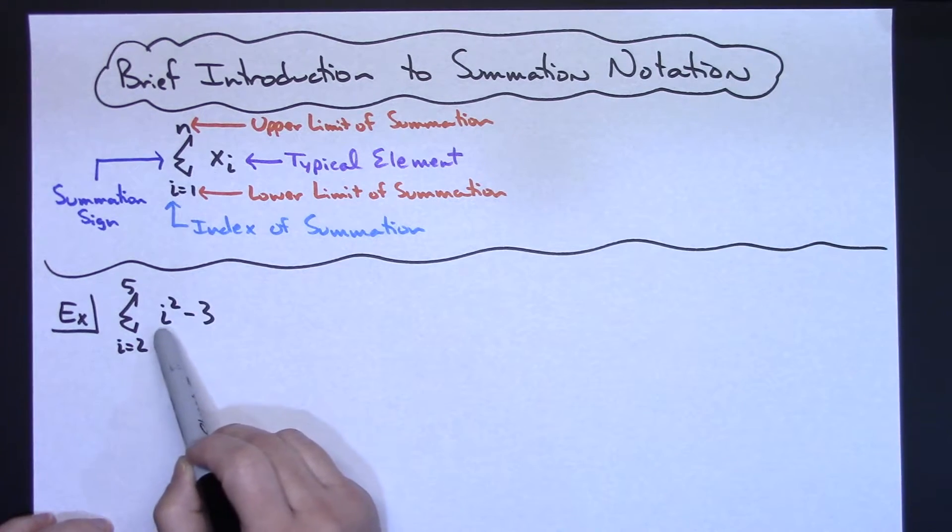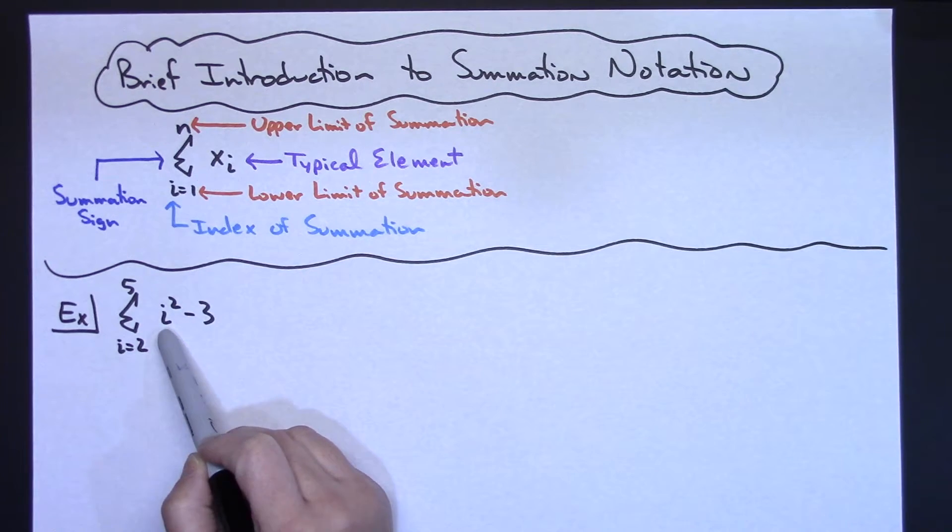This is my element. And in here, I've got the variable i, so that's the part that's going to change. I squared minus 3. The squared and the minus 3 part is going to remain the same every time.